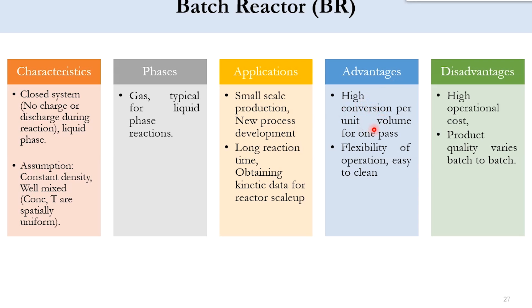Advantages include high conversion per unit volume for one pass, flexibility of operation, and easy to clean the system because it's not a continuous process. Disadvantages include higher operational cost and product quality could vary from batch to batch.